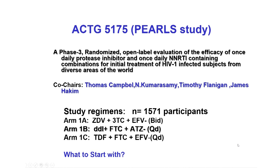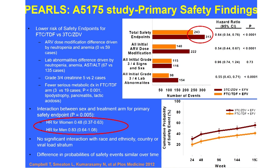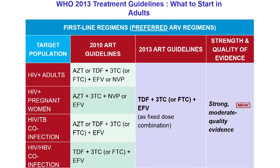Following the HPTN 052 and START trials — both funded by US NIH, done in the best ethical standard in a randomized way — we showed that antiretroviral therapy prevents transmission and prevents various opportunistic infections. As a result, in 2016 the guidelines completely changed to treat everybody. And today, because of the implementation of that particular guidance, WHO projects it will avoid 21 million AIDS-related deaths and prevent 28 million new infections by 2030.